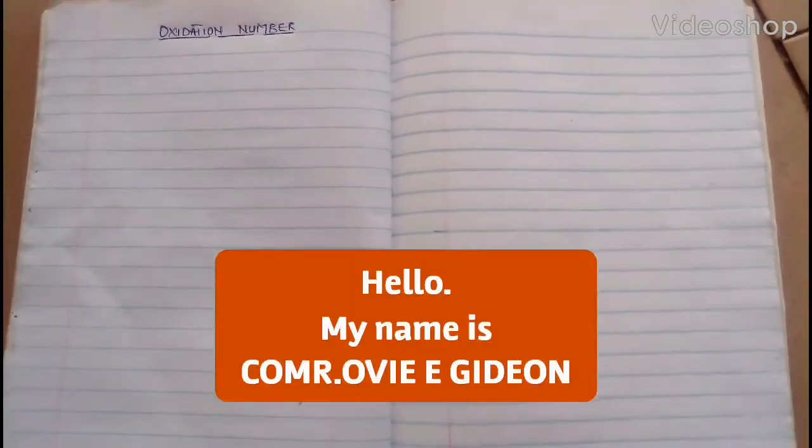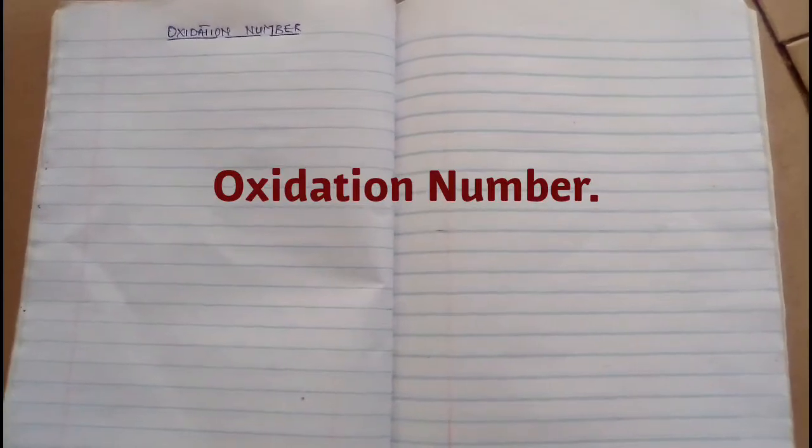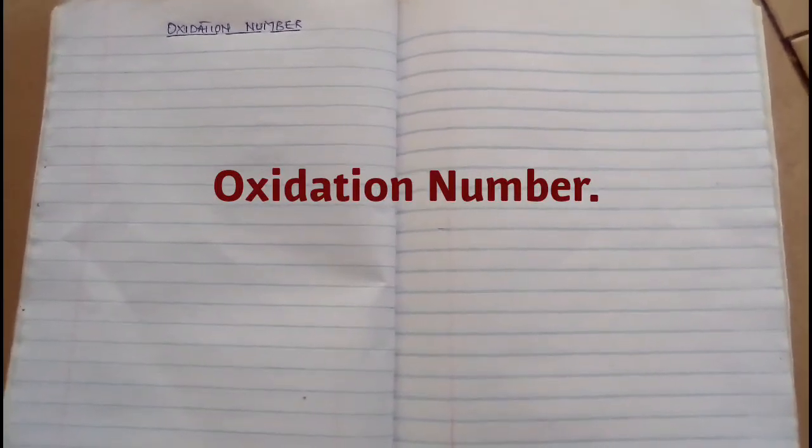My name is coming over again. Today I'll be talking about oxidation number. What is oxidation number? Oxidation number of an element is the number or charge an element appears to have. Then what is valency?